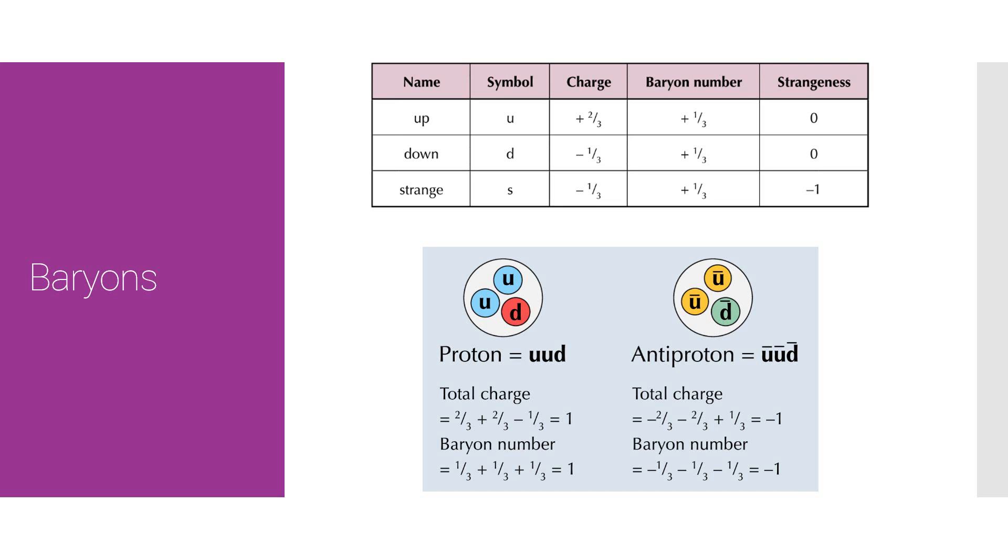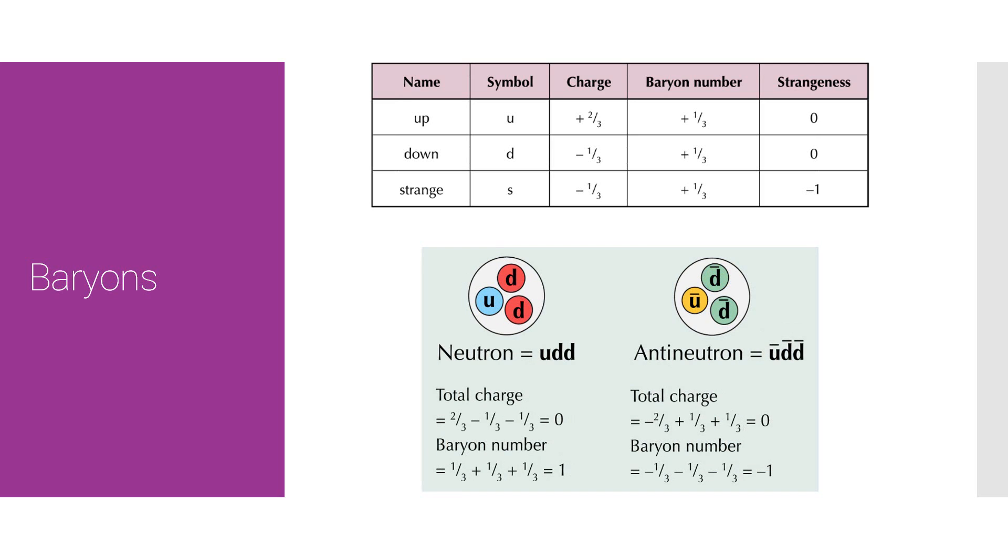All the antiquarks have baryon numbers of minus a third, so therefore that's why the antiproton has a baryon number of minus one. We can do the same thing for the neutron: up, down, down, that adds up to a total charge of zero, and a baryon number of one, and the anti-up, anti-down, anti-down adds up to a total charge of zero, but a baryon number of minus one.